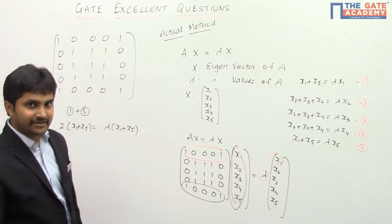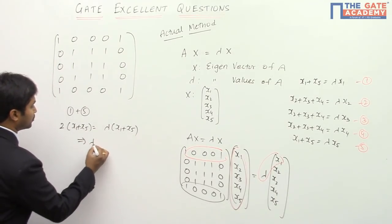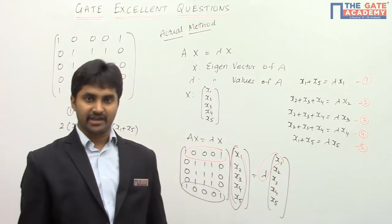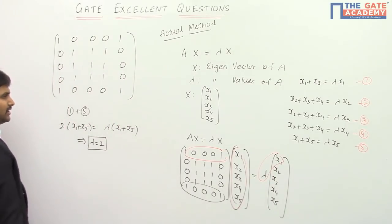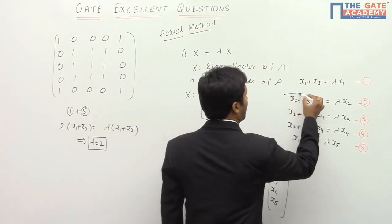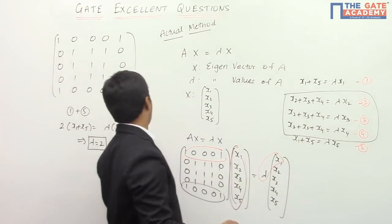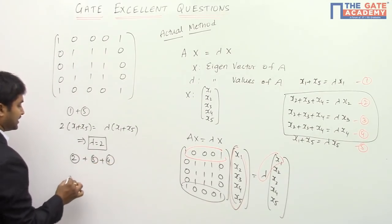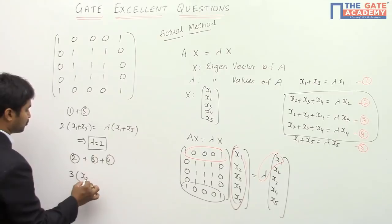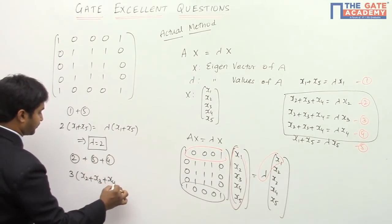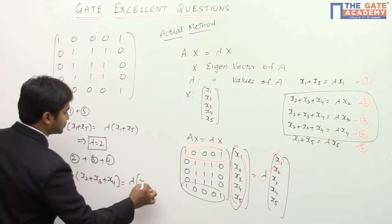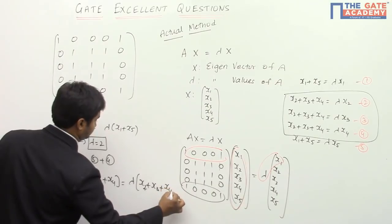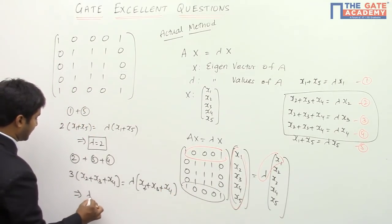From equations 1 and 5 (x1 + x5 = λ·x1 and x1 + x5 = λ·x5), adding both sides gives 2(x1 + x5) = λ(x1 + x5), so λ = 2. Adding equations 2, 3, and 4 gives 3(x2 + x3 + x4) = λ(x2 + x3 + x4), which implies λ = 3. So we have obtained two eigenvalues: λ = 2 and λ = 3.